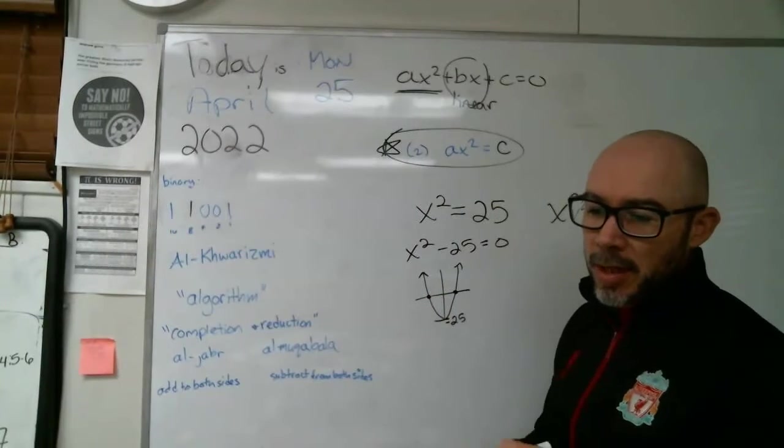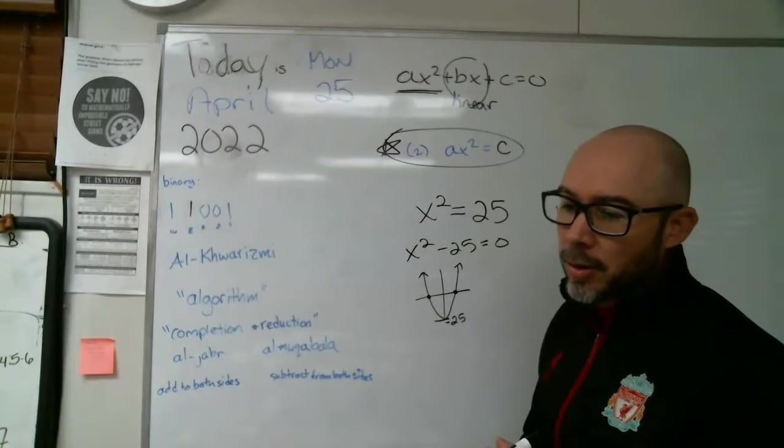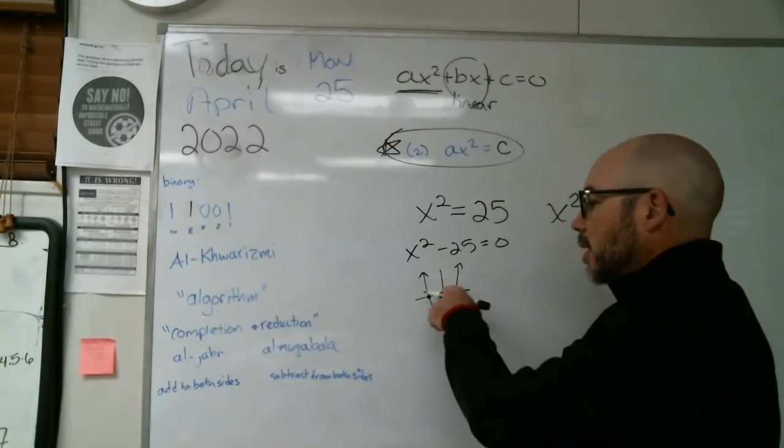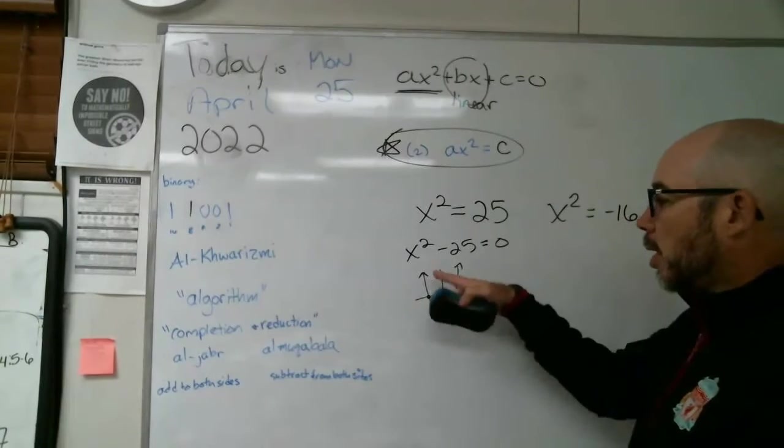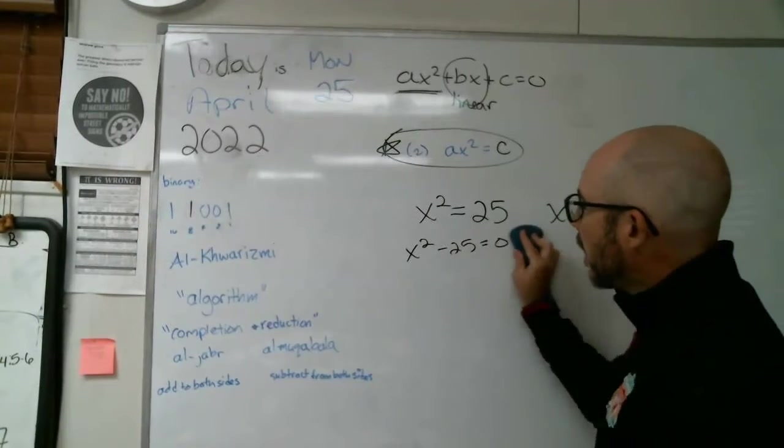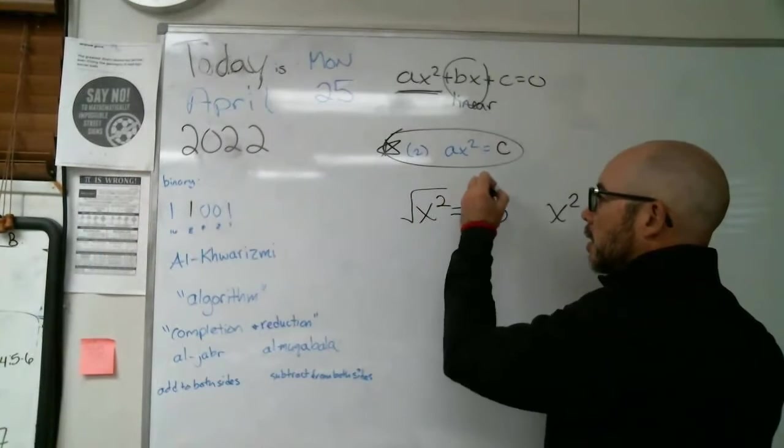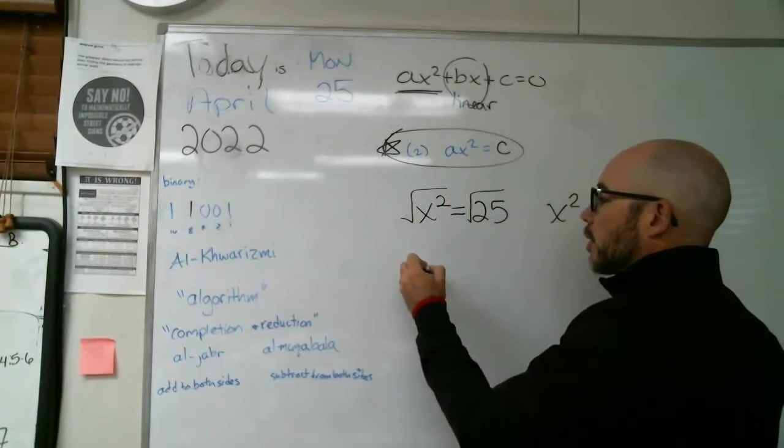And what we're looking for, again, are the zeros or the solutions. Okay. The examples say solve. And we're looking for the solutions of this, basically where that parabola crosses the x axis. So I complicated it, right?